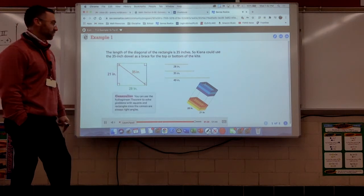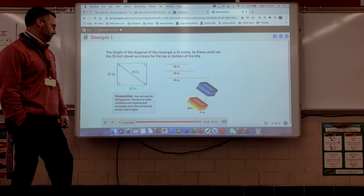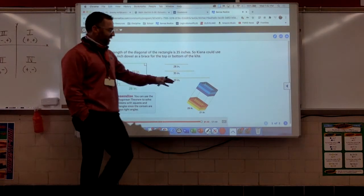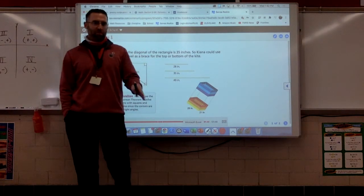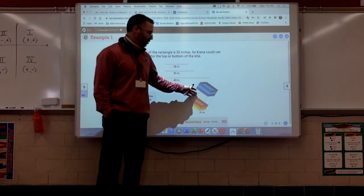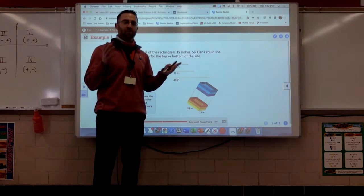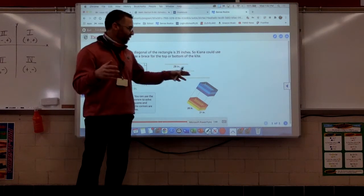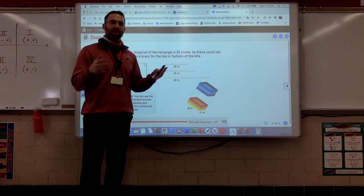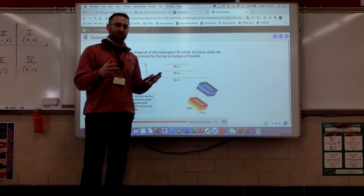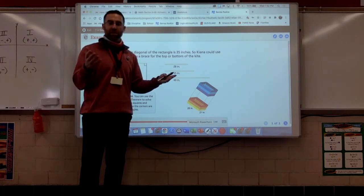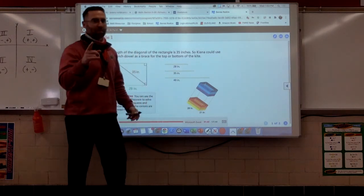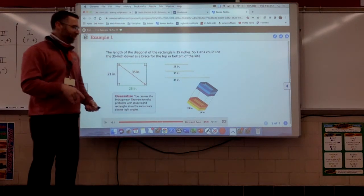We can use the Pythagorean theorem to solve problems with squares and rectangles, since the corners are always right angles. And that goes to the definition of what's called a rectangular prism. This is a rectangular prism because all six sides are rectangles. And one thing you've got to remember about a rectangle, every corner in a rectangle is a 90-degree angle, which opens up the possibility of using the Pythagorean theorem. So, we need to remember that about all rectangular prisms.